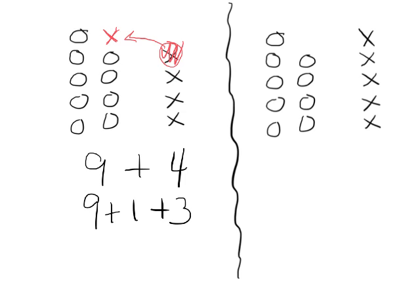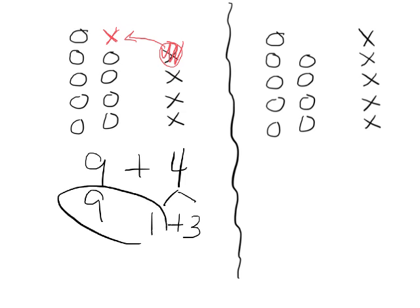Now, I'm going to erase that because I'm going to write it in a slightly different way. So we took the 9, and then the 4 became a 1 plus a 3. And the 9 plus the 1, they added together to give us 10 plus 3, which is 13.